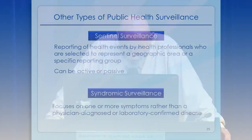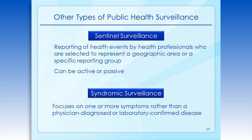Another sentinel system at one time used cotton pledgets placed in sewers, which were periodically sampled and tested for enteric bacteria to look at the presence of various enteric pathogens in communities. The usefulness of syndromic surveillance became apparent after the outbreak of cryptosporidiosis in Milwaukee back in 1992, and the increased awareness of the threat of bioterrorism in 2001. Syndromic surveillance focuses on the signs and symptoms of an illness rather than on physician-diagnosed or laboratory-confirmed illnesses.